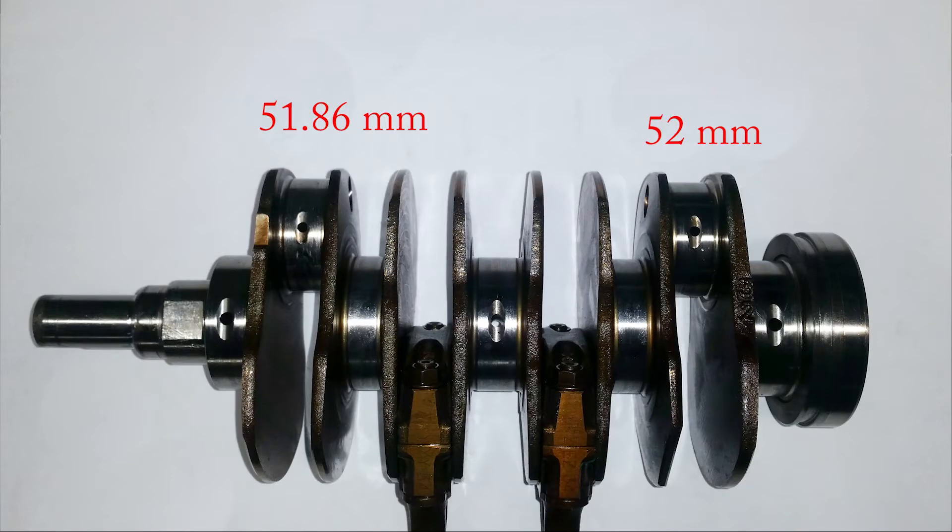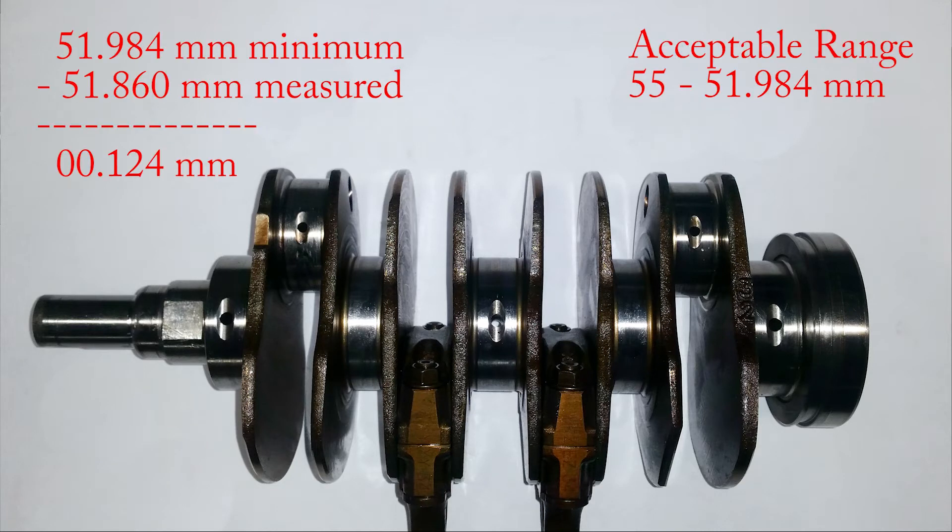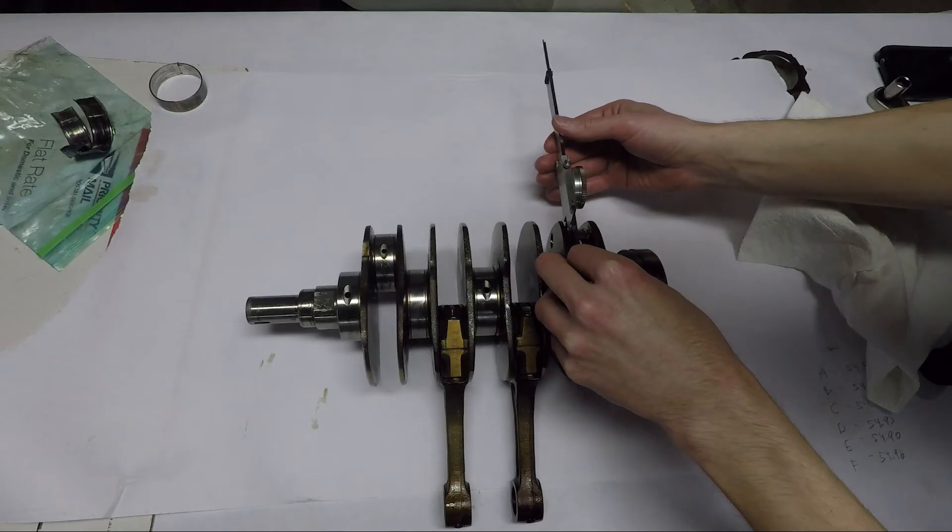The number 4 journal was right at 52, but the number 1 journal was at 51.86. That's more than a tenth of a millimeter beyond the allowable measurement of 51.984.